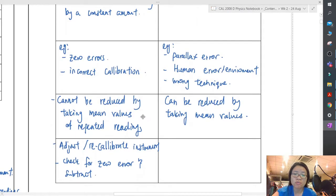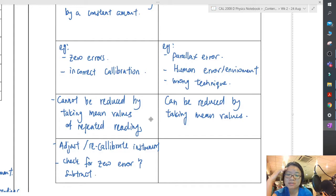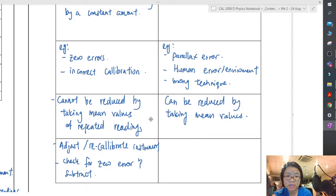Systematic error cannot be reduced by taking mean values, because your systematic error means you are already systematically wrong — not wrong because of randomness. But you can reduce random error by taking mean values. To improve a systematic error, you recalibrate the instrument, or check for zero error and subtract from the real value.